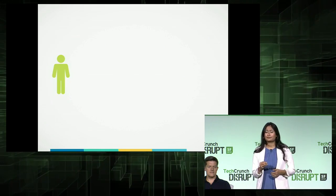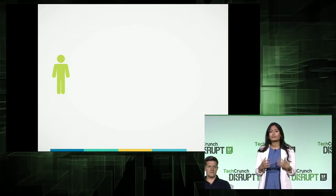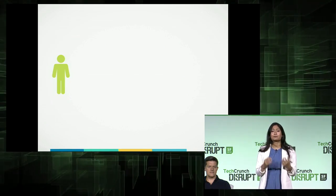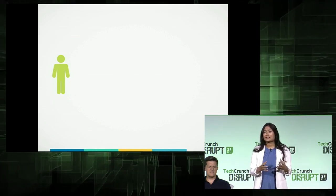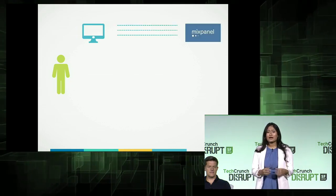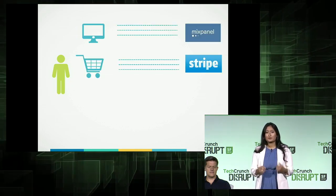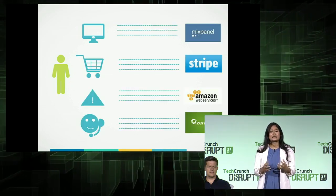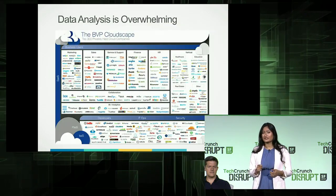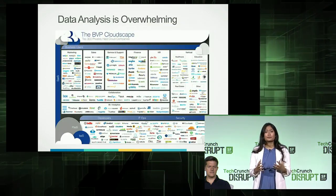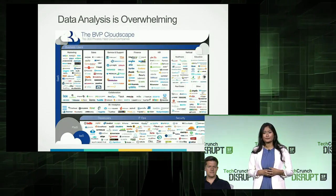Compounding this problem is the fact that today all our data is fragmented across multiple services. Analytics data in Mixpanel, payments data in Stripe, and so on. Data is in silos, and it's only going to get worse as we embrace more and more services in the future.